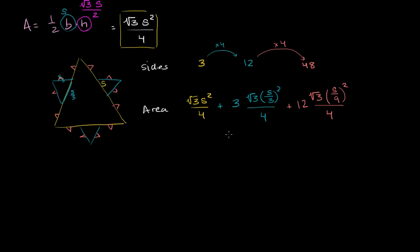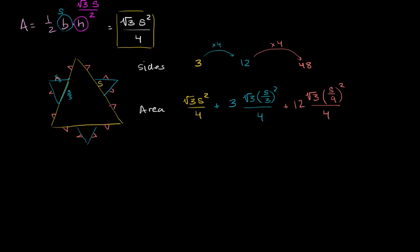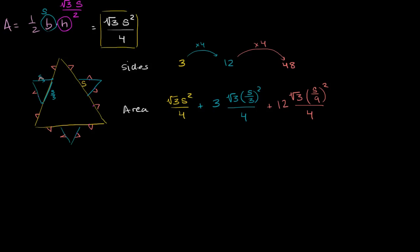In the next pass, we'll have 48 new triangles with sides s/27, adding a term of 48 times √3·(s/27)²/4. We're going to keep adding an infinite number of such terms to get the area of a true Koch snowflake. The trick is finding whether this infinite sum gives us a finite number.